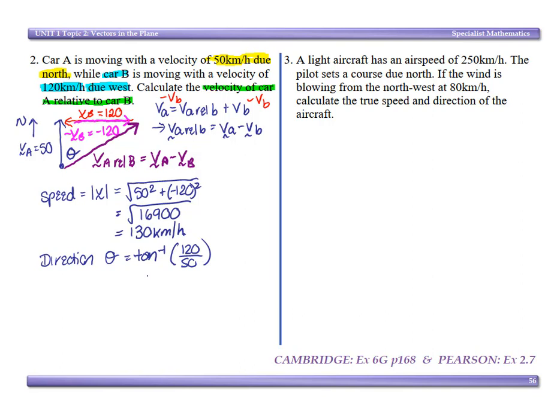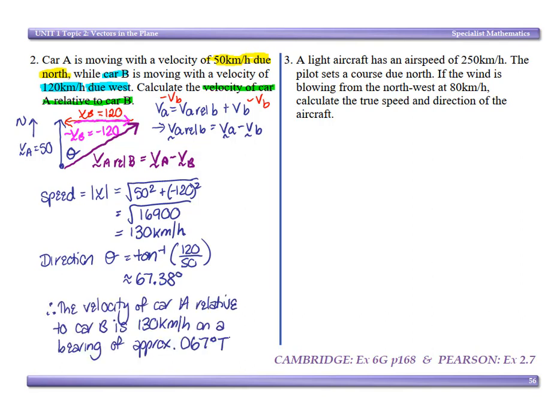Finish with a therefore statement. Last example: a light aircraft has an airspeed of 250 kilometers per hour. The pilot sets course due north. If the wind is blowing from the northwest at 80 kilometers per hour, calculate the true speed and direction of the aircraft, which is actually asking for velocity.